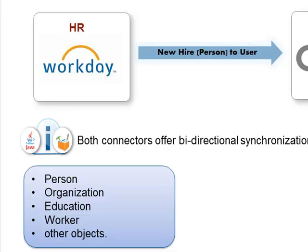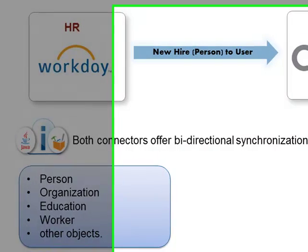The objects that we support — as you saw in step two of the data synchronization task when you drop down and pick the list of supported objects — include person, organization, education, and worker. There are more that you can choose from for bidirectional synchronization of Workday with any other application, on-premises or cloud.